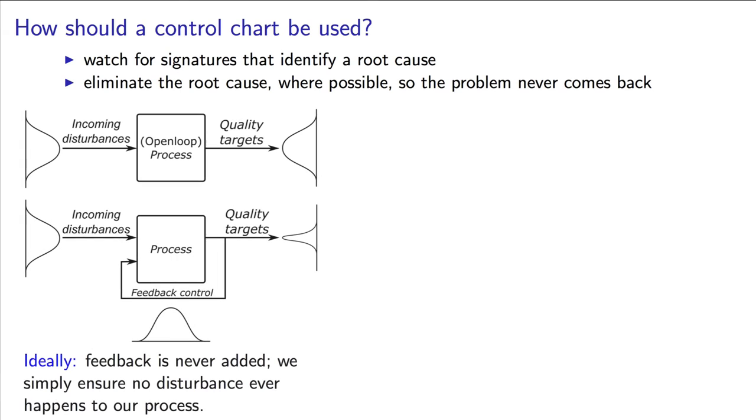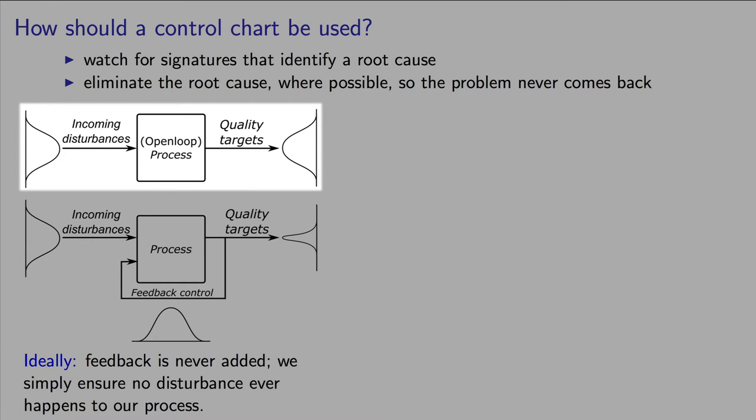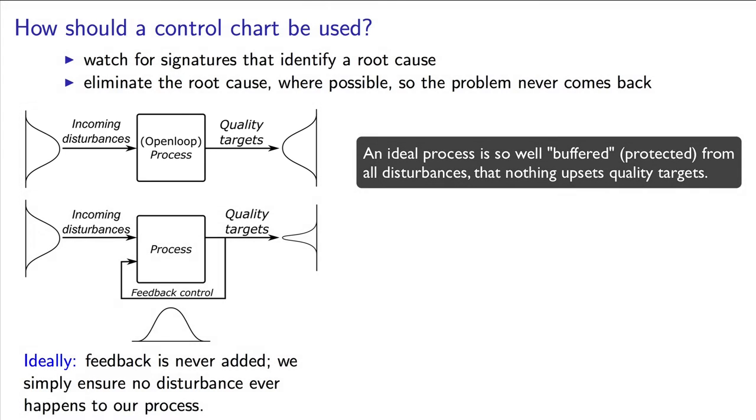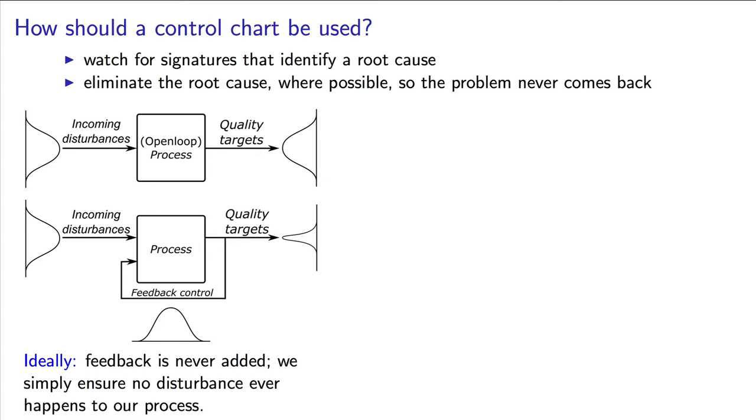Feedback control actually introduces variation into our system. It makes a very minor adjustment and does so with regularity to the process, with the hope that it counteracts the disturbance to keep the process on target. In an ideal world, we would never need to apply feedback control. In an ideal world, we would never even have variations entering into our process in the first place to cause these destabilizing effects. But for processes where quality is critical, it is worth aiming for that standard.